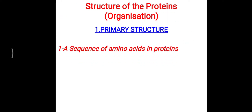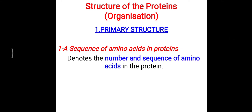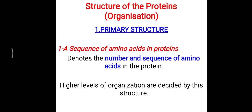First, we will look at the primary structure. The primary structure basically denotes the sequence of amino acids in a protein. There are only 20 amino acids in our body, but the sequence of these amino acids makes a large variety of different proteins. It denotes the number as well as the sequence of amino acids in the protein. Higher levels of organization — secondary, tertiary, and quaternary — are decided by this primary structure.